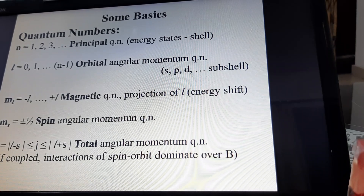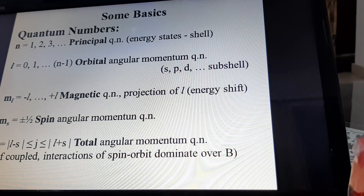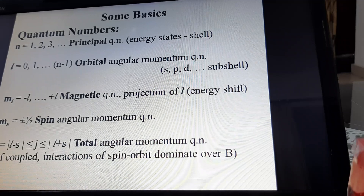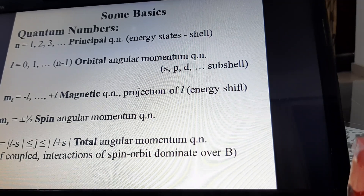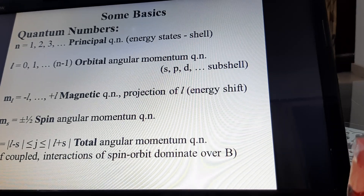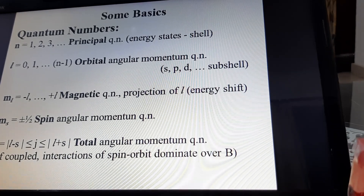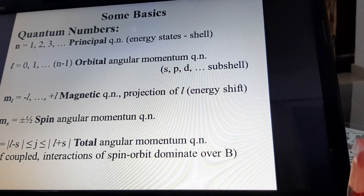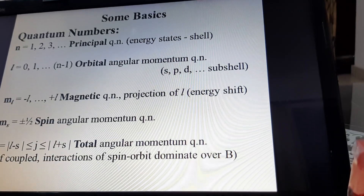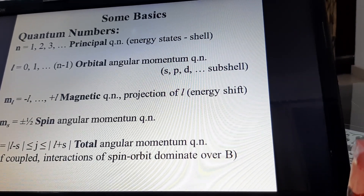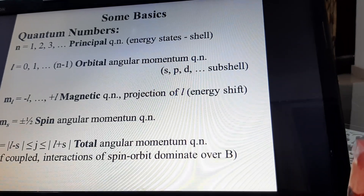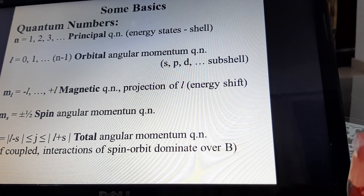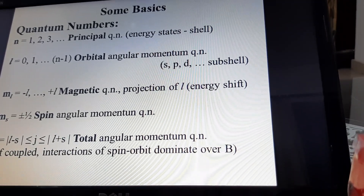The third quantum number is the magnetic quantum number, which represents the energy shift. It is written as M_L, and the values for the magnetic quantum number range from -L to +L. The fourth is the spin quantum number, noted as ±1/2, and it has only two values, that is ±1/2. The fifth is the total quantum number, written as J, with values varying from L-S to L+S.